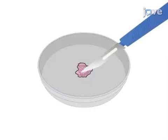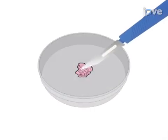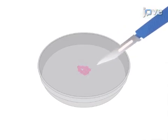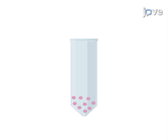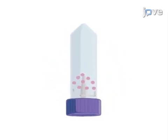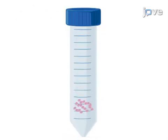This is accomplished by first using a sterile scalpel to dice the tissue fragments into small pieces. Next, the tissue slurry is transferred to a mechanical dissociator tube, whereupon the fragments are further homogenized into a single-cell suspension. The cells are then collected by centrifugation for downstream analysis.